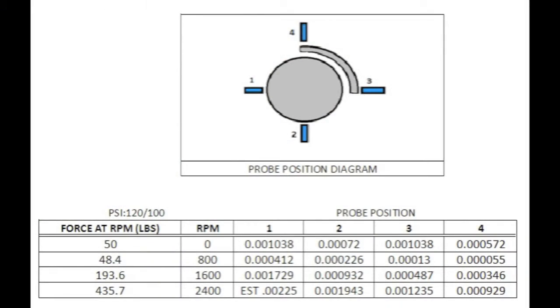Regarding displacement data, at 2400 RPM with the 400 pound test weight, the maximum motion of the shaft, which includes the damper motion, was two and a quarter thousandths of an inch.